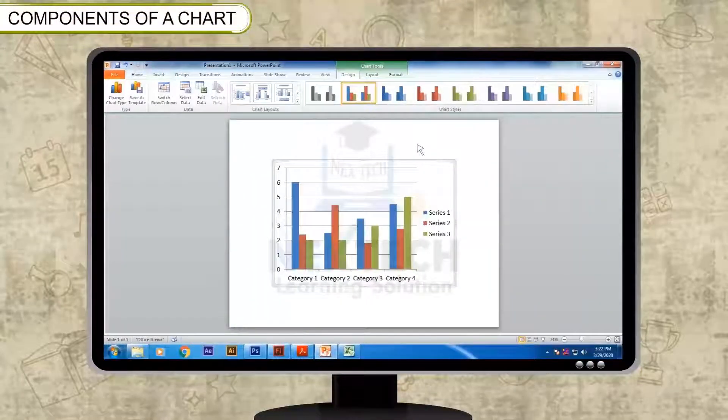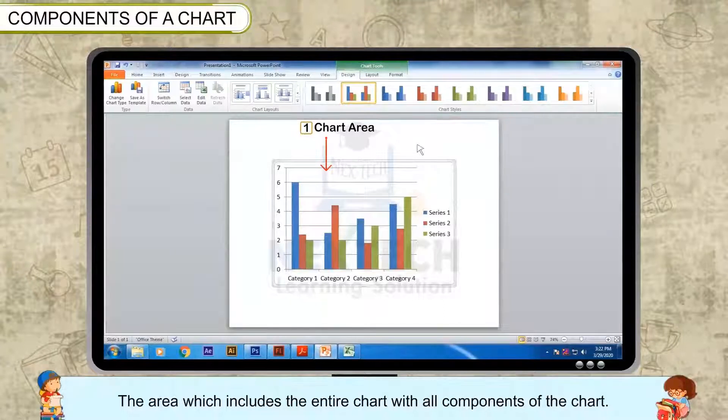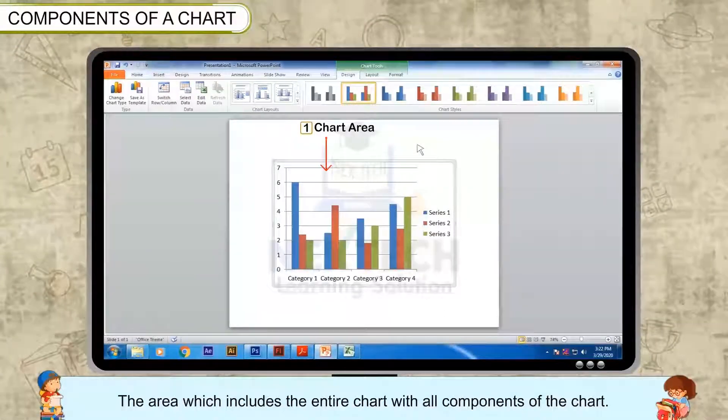Components of a chart. Chart area: The area which includes the entire chart with all components of the chart.